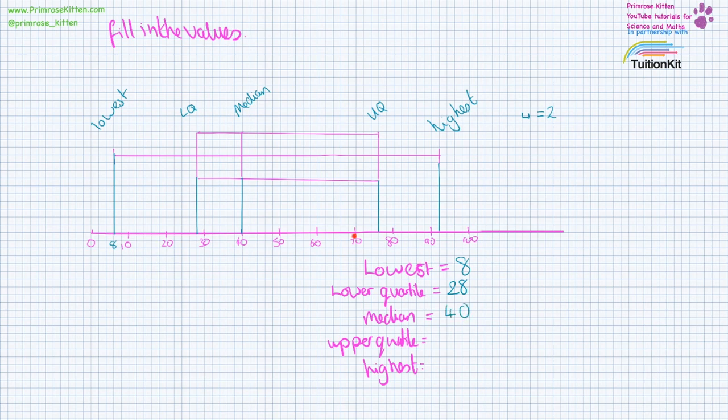The upper quartile is 70, 72, 74, 76. And the highest, 90, 92.